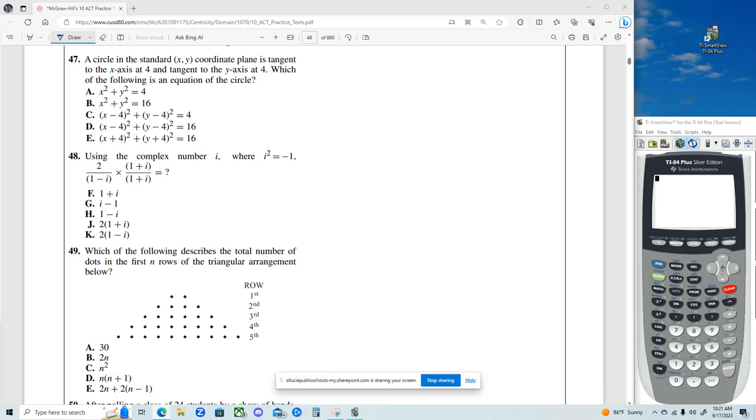All right, number 47. A circle in the standard xy coordinate plane is tangent to the x axis at 4 and tangent to the y axis at 4.